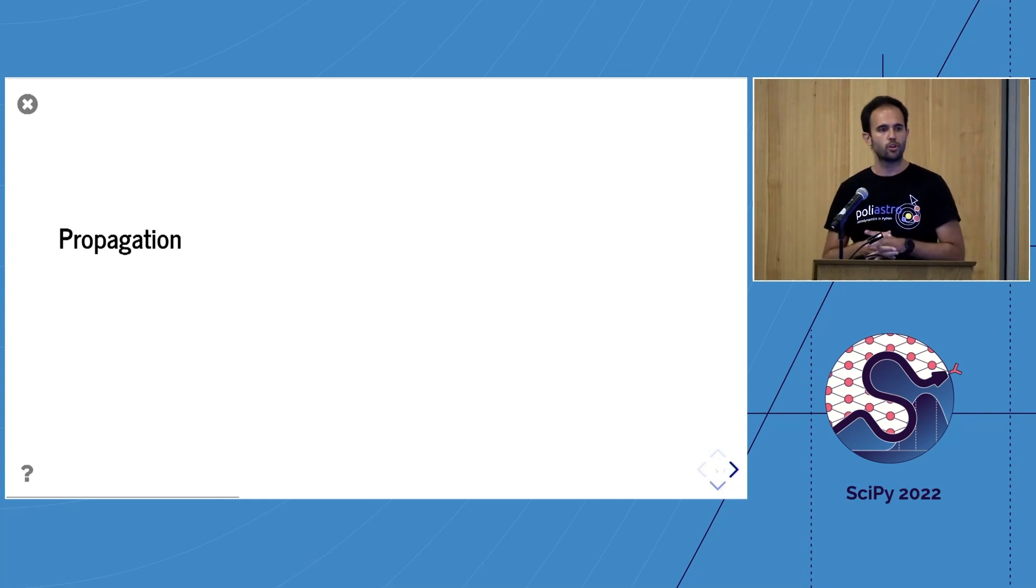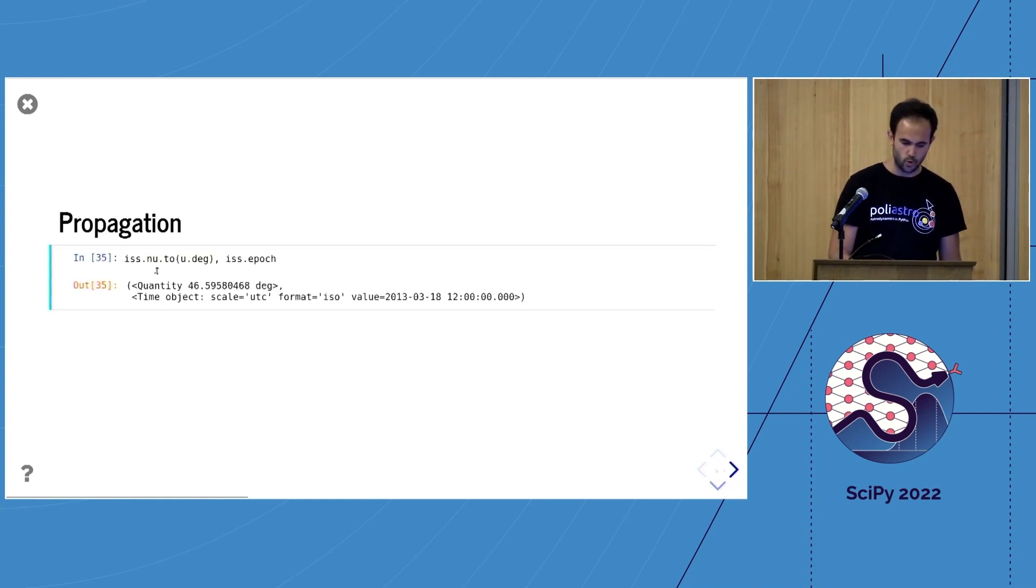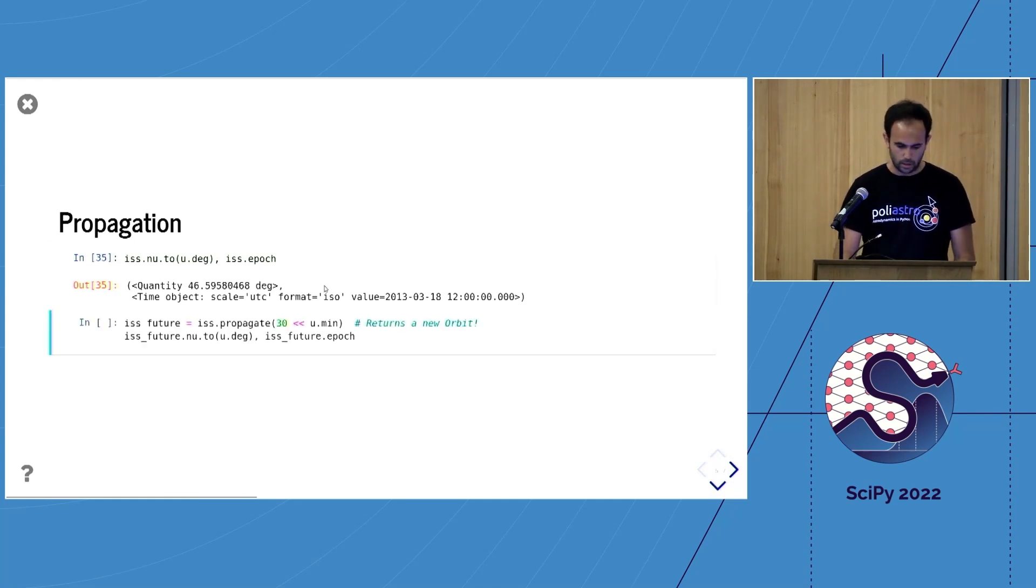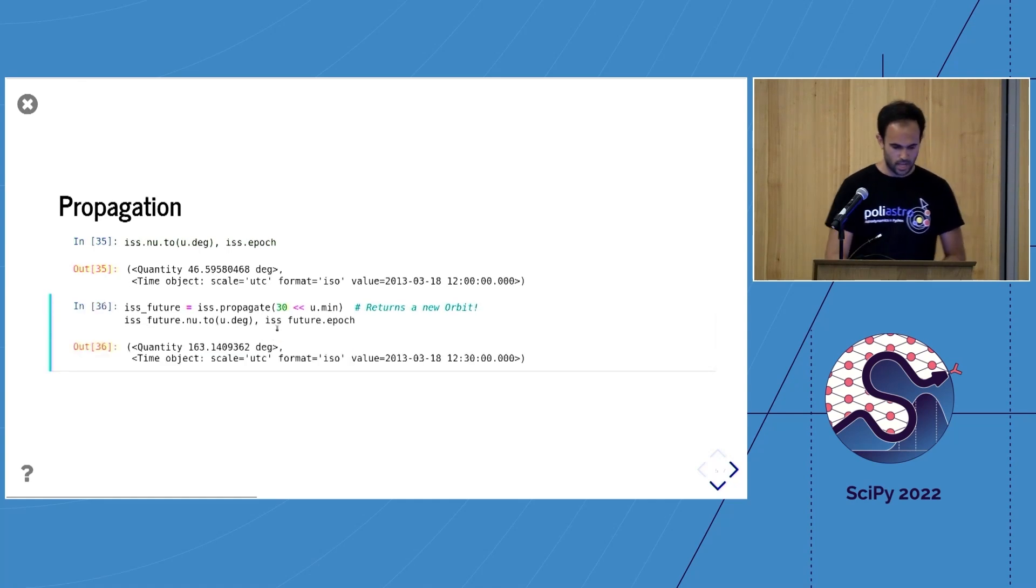The most important operation we want to do with orbits is propagation, which is the fancy word for solving the initial value problem. I have the current position and want to know where the object is going to be at a future time. Notice there's this new property—the symbol for the true anomaly, an angle measured from the pericenter. When I call the propagate method with, for example, 30 minutes, this returns a new orbit object with the true anomaly increased and the epoch exactly 30 minutes later.